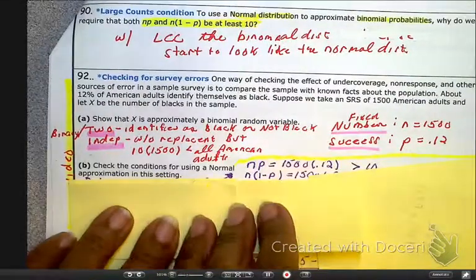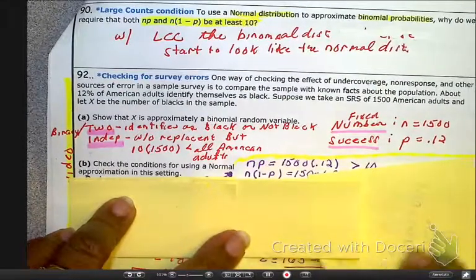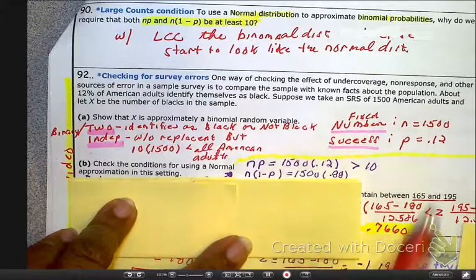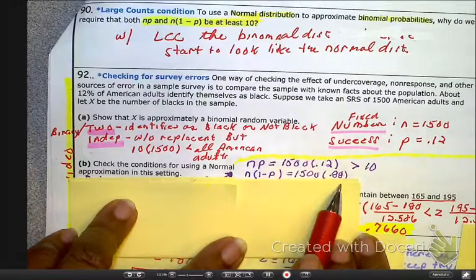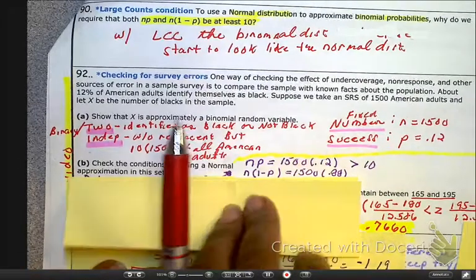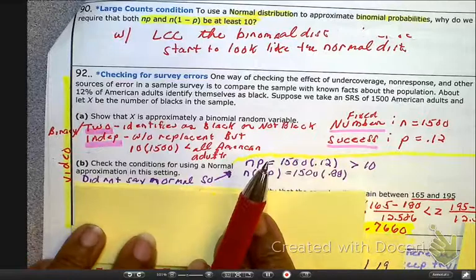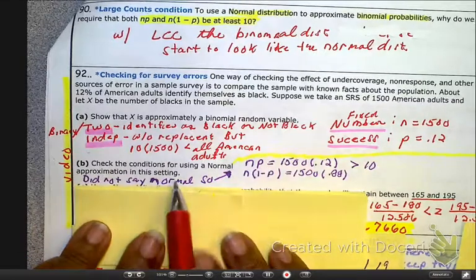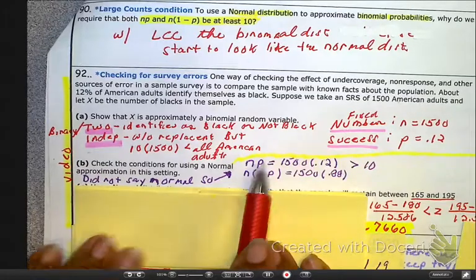The next question is, check the conditions and assumptions for a normal approximation. Well, let's face it, LCC was met, and the answer is yes. Okay? So, the large count condition has been met. Okay? And remember, we have to use that because they didn't say anywhere that it was approximately normal. So, we have to prove it.